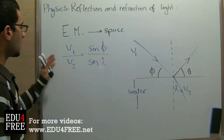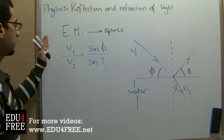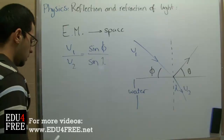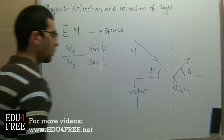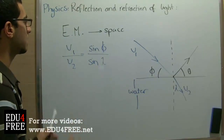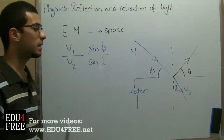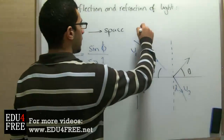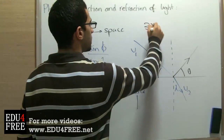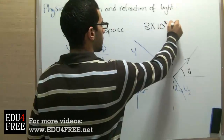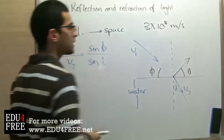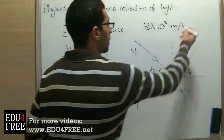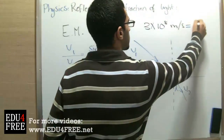Now, this is the rule of light refraction. We have to know that as light travels in space, it has a constant velocity. This velocity equals 3 times 10 to the power of 8 meters per second. And since this speed is constant, we refer to it as C.